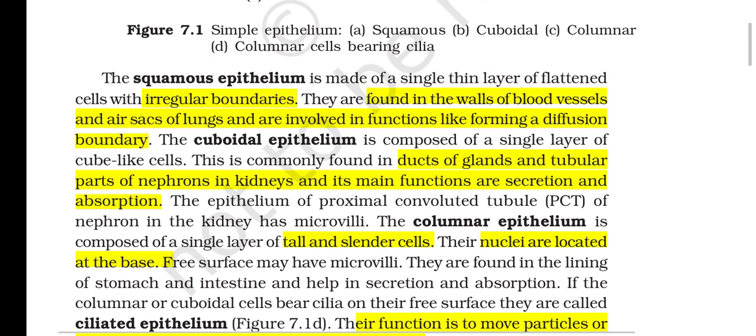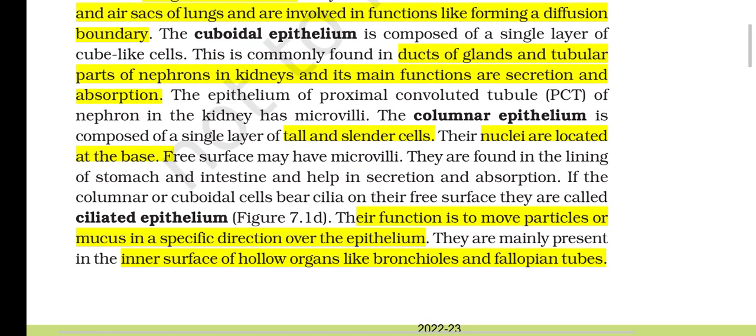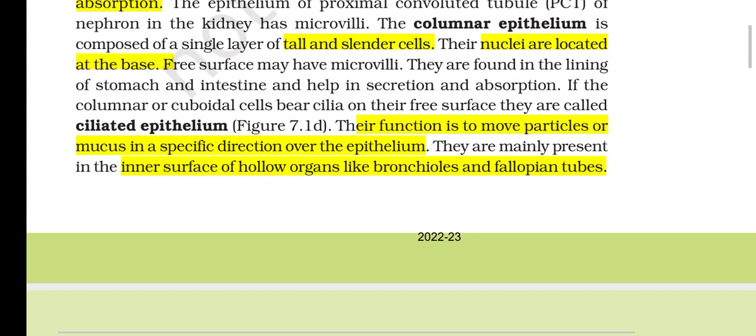Cuboidal epithelium is composed of a single layer of cube-like cells, commonly found in ducts of glands and tubular parts of nephrons in kidneys; its main functions are secretion and absorption. The epithelium of the proximal convoluted tubule (PCT) of the nephron has microvilli. Columnar epithelium is composed of a single layer of tall and slender cells whose nuclei are located at the base; they are found in the lining of the stomach and intestine and help in secretion and absorption. If columnar or cuboidal cells bear cilia on their free surface they are called ciliated epithelium, which moves particles or mucus in a specific direction.